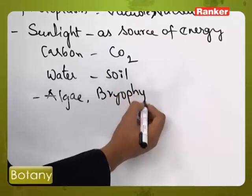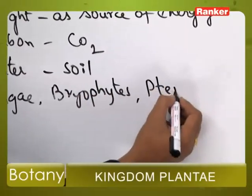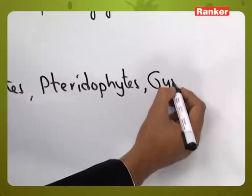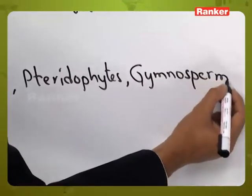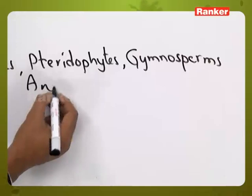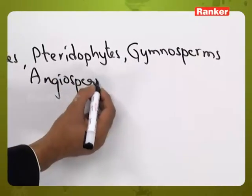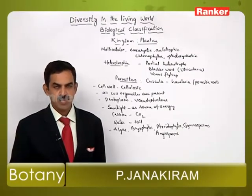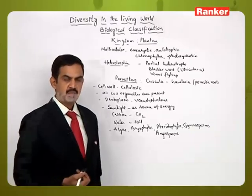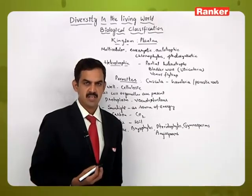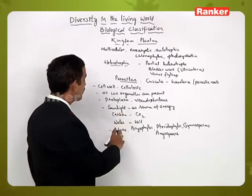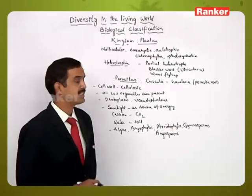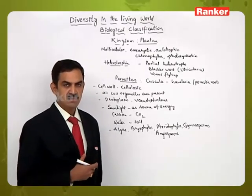Plantae contains algae, bryophytes, pteridophytes, gymnosperms, and angiosperms. The Plantae group of individuals exhibit growth and development and participate in vegetative, asexual, and sexual methods of reproduction. The individual characteristic features of algae, bryophyta, pteridophytes, gymnosperms, and angiosperms will be dealt with in the next part of our syllabus in plant kingdom.